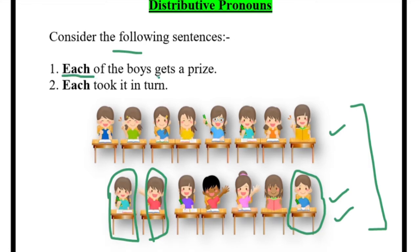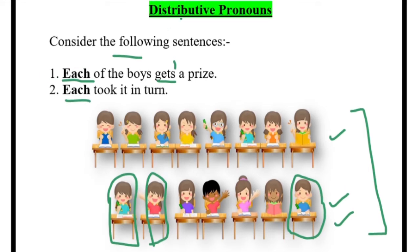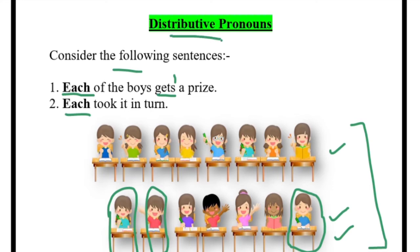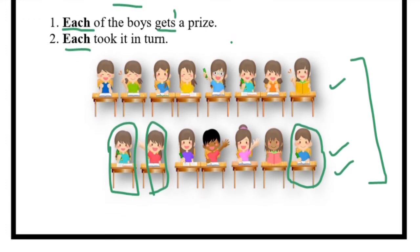Since 'each' is singular, you use a singular verb for it. So 'each of the boys gets' — singular verb. Another example: 'each took it in turn.' Distributive means when you are distributing something — when you are talking about each one at a time. So it will always use a singular verb.